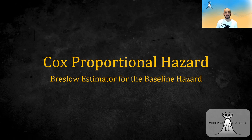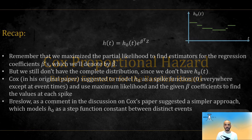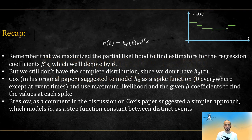Hi guys, in this video we are going to look at the Breslow estimator for the baseline hazard, or H0. A short recap, we are talking about Cox's proportional hazard, which models the hazard as this function of some covariates.